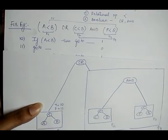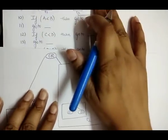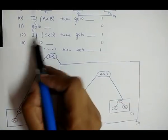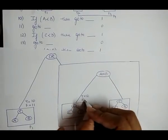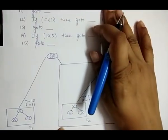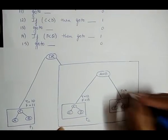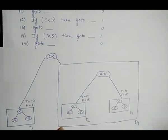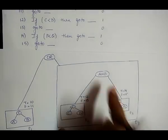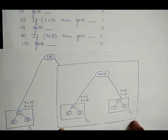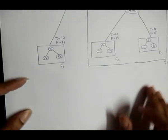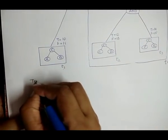Similarly for t2 ('c < d'): the true value is on line number 12 and the false value is on line number 13. For t3 ('p < q'): the true value is on line number 14 and the false value is on line number 15.